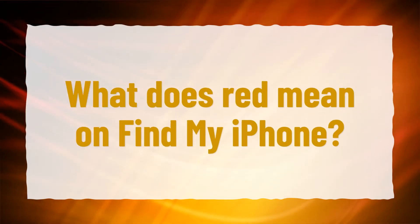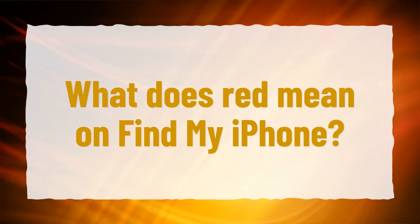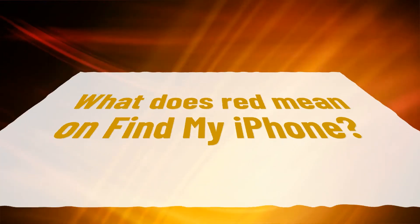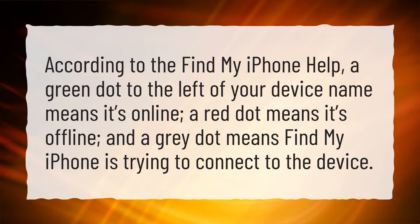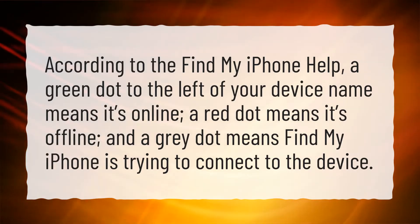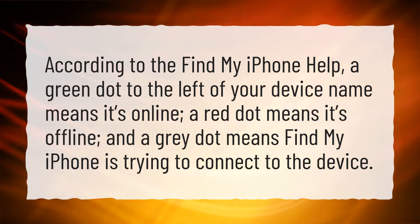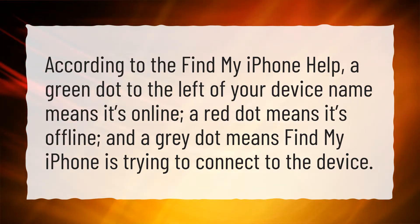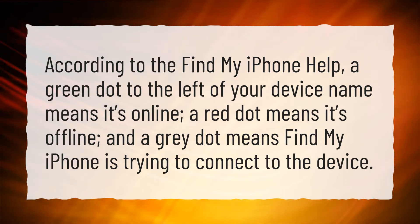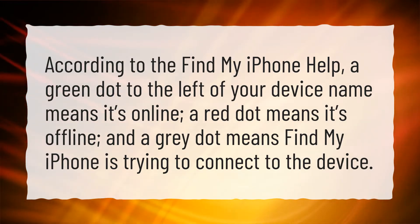What does red mean on Find My iPhone? According to the Find My iPhone help, a green dot to the left of your device name means it's online, a red dot means it's offline, and a gray dot means Find My iPhone is trying to connect to the device.